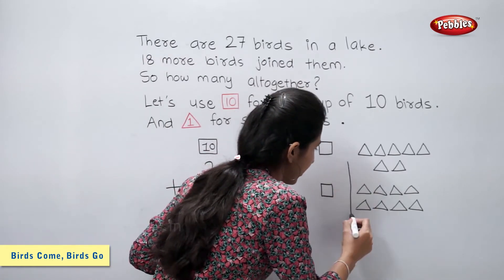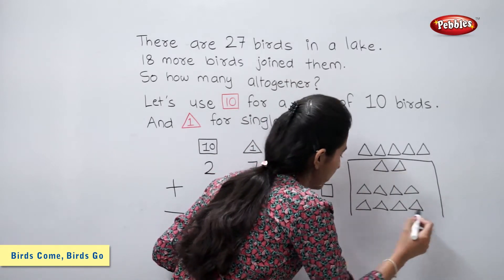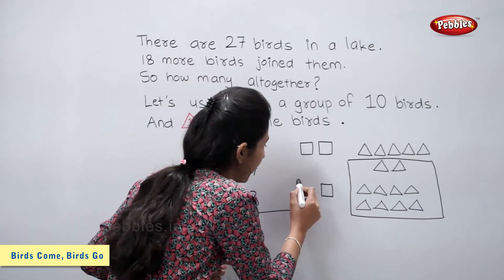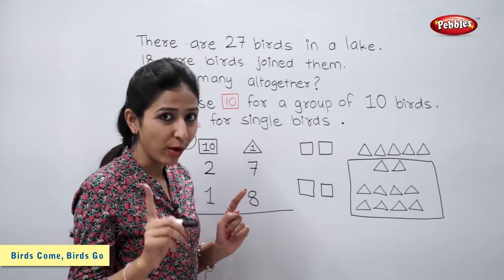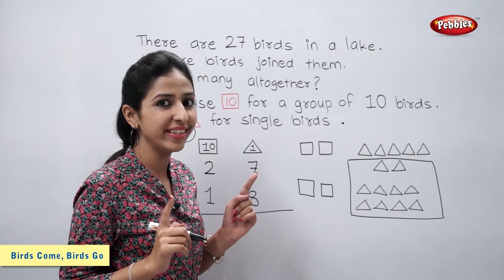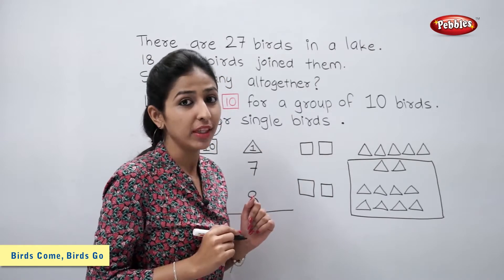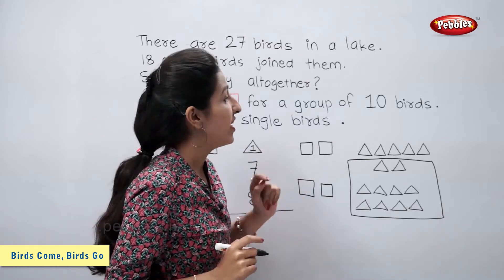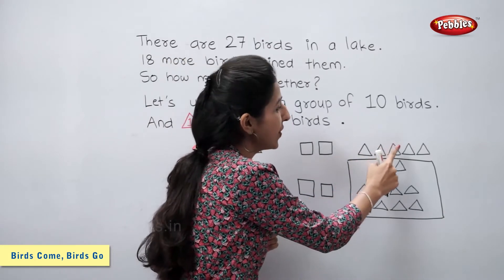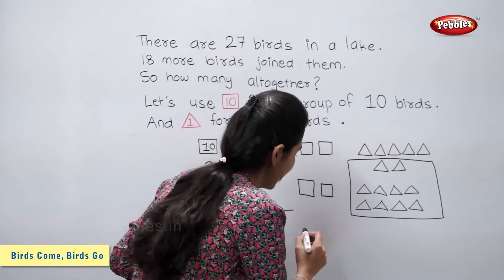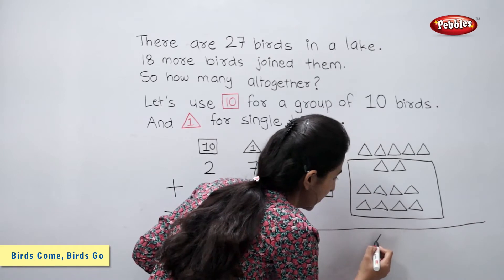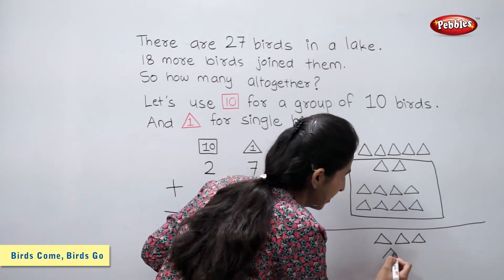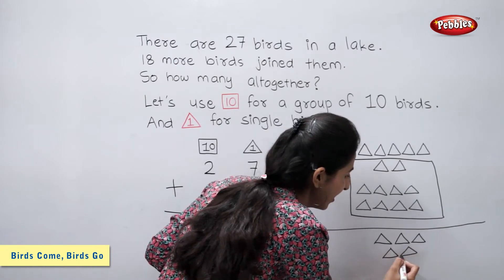Using these 10 triangles, I will make one more square. This means one more group of 10 birds. Now, students, count and tell me how many triangles we are left with. Right — we are left with 1, 2, 3, 4, and 5 triangles.